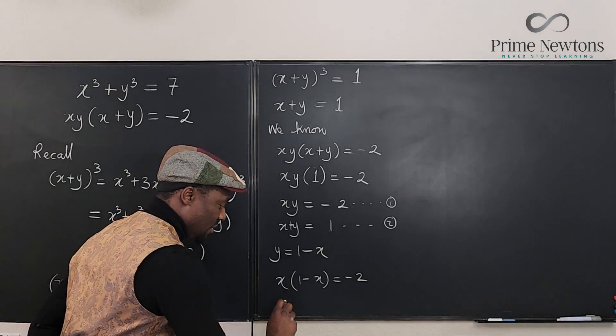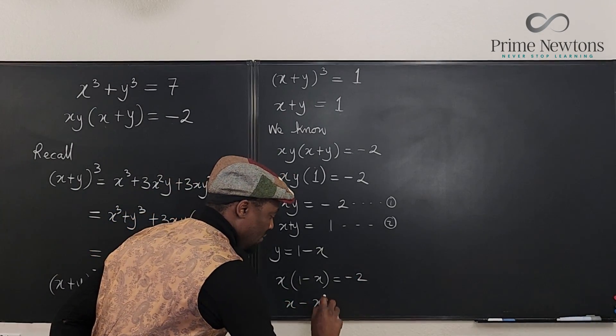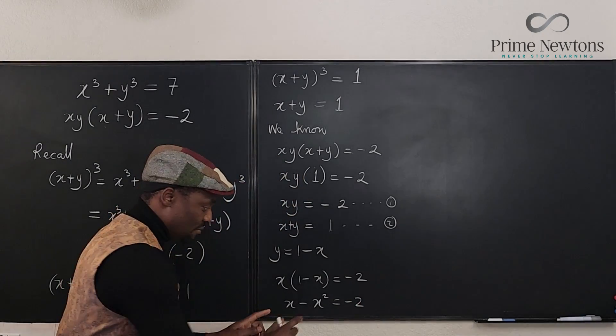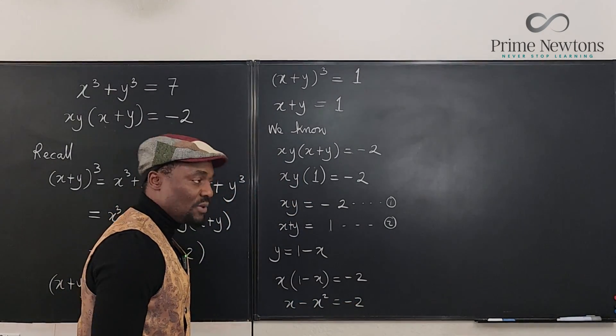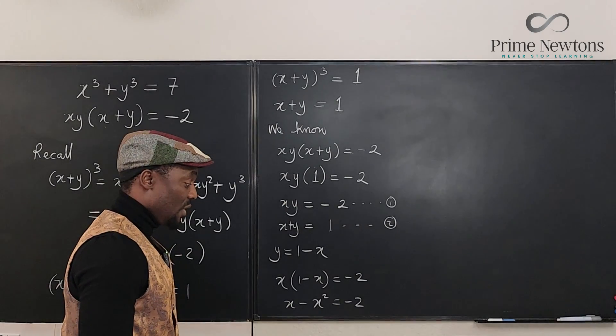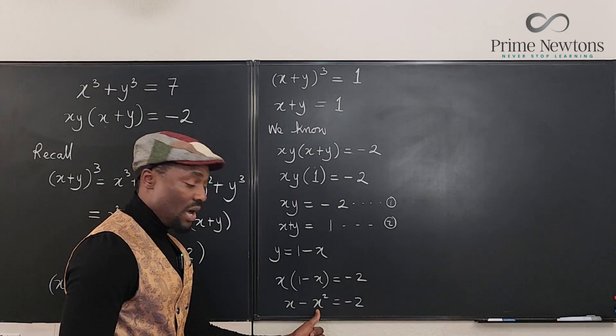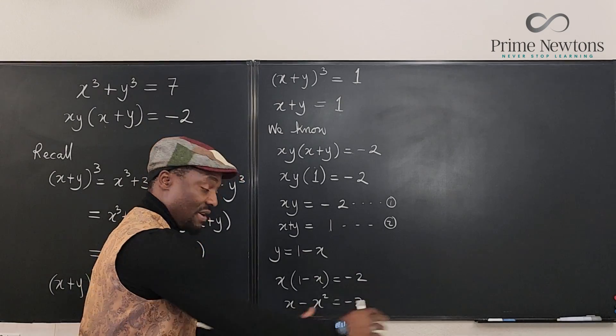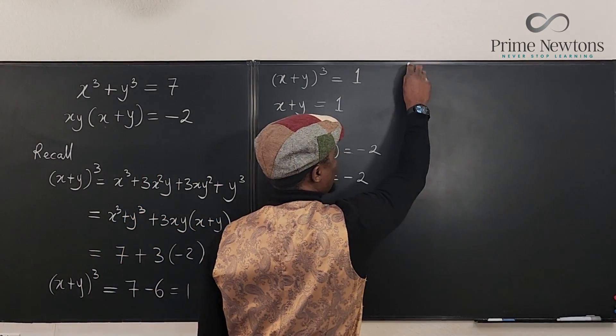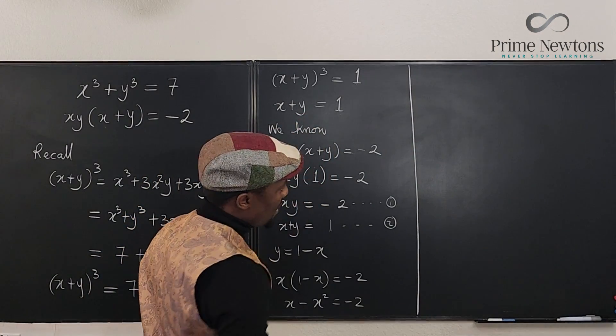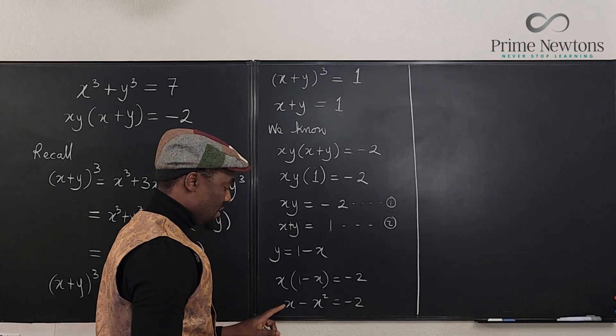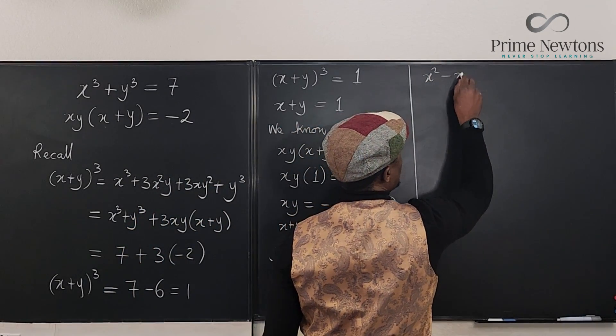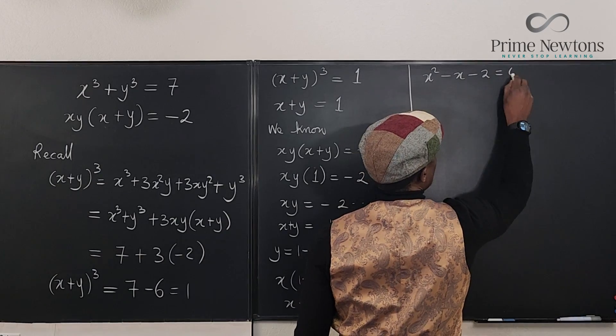If I distribute this, I'm going to have x minus x squared equals minus 2. So let's move everything over to the other side. We're going to have a zero on the left, but on the right, this is going to become positive. This becomes negative. This stays negative, right? If we move everything over. So here, what we have left is going to be x squared minus x minus 2 equals 0.